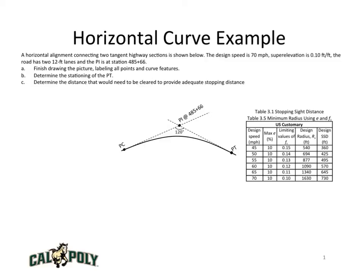The superelevation is 0.1 feet per foot. The road has two 12-foot lanes, one in each direction. And the PI is at station 485 plus 66.